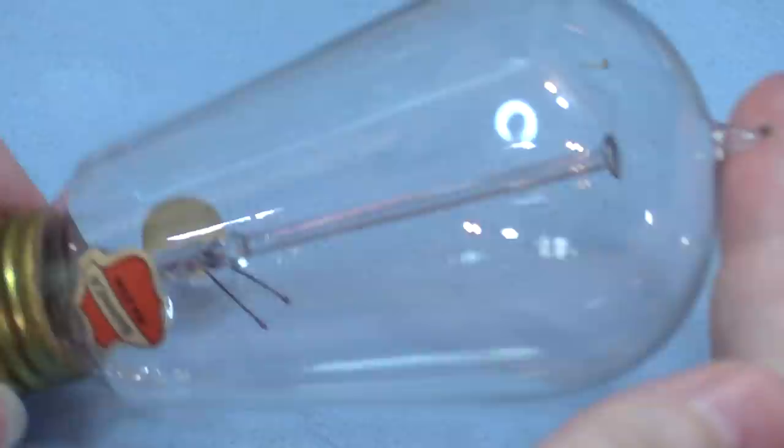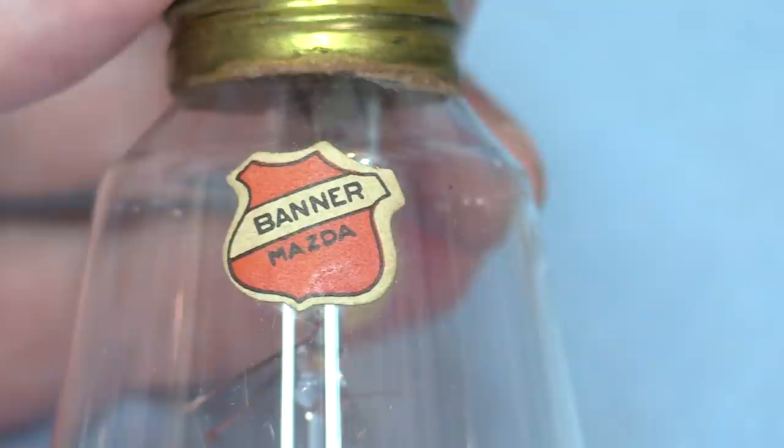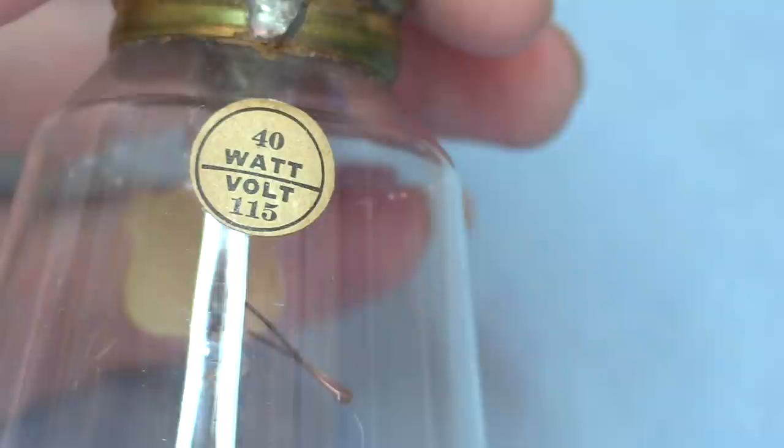Lamps are sold to central lighting stations. So there you go. It's got a beautiful little nipple on the top and it's got the badge here, banner, Mazda, genuine, and 40 watts, 115 volts.